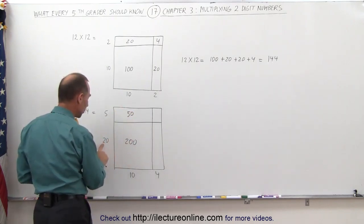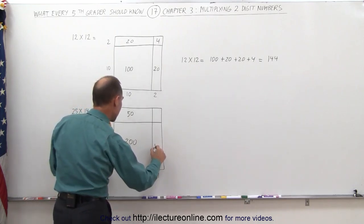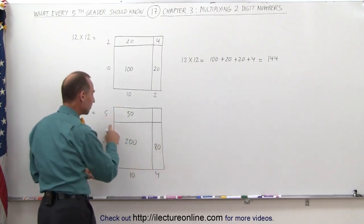Here I'm going to multiply the 20 times the 4, which gives me 80. And finally, 5 times 4, which gives me 20.